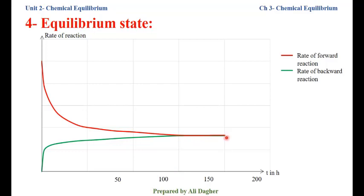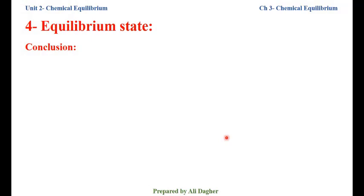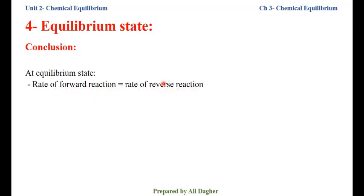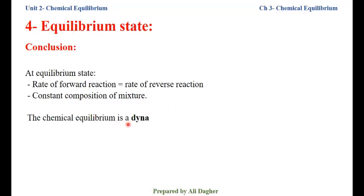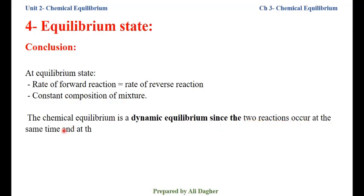Conclusion: At the equilibrium state, the rate of the forward reaction equals the rate of the reverse reaction. We have constant composition of the mixture — the quantity, number of moles, or concentration of reactants remains constant, and the quantity, concentration, or number of moles of products remains constant. The chemical equilibrium is a dynamic equilibrium since the two reactions occur at the same time and at the same rate.